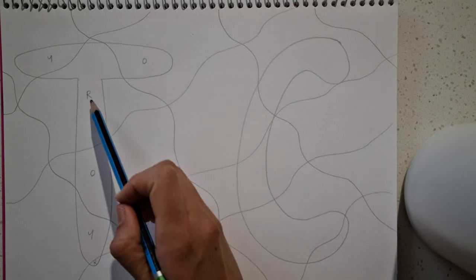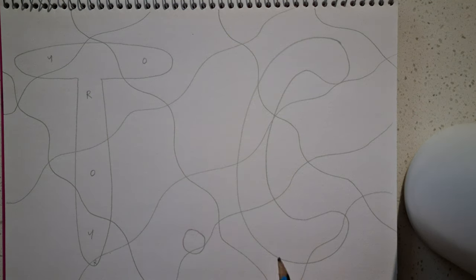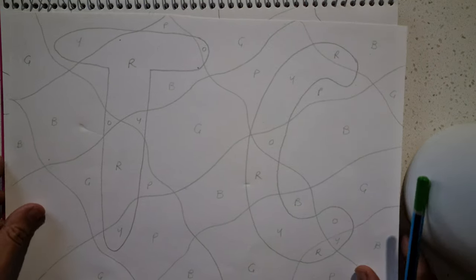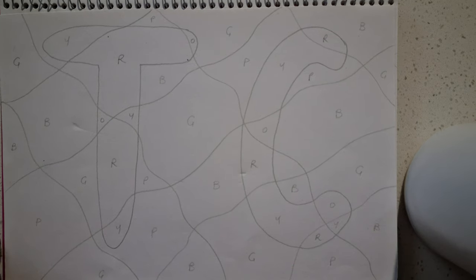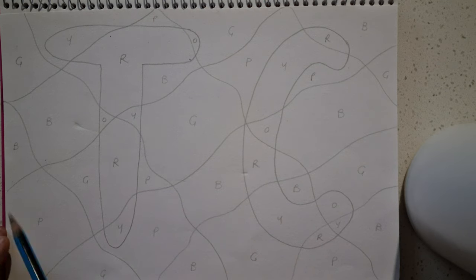When you are writing the initials of the colors in, keep only the warm colors in one of the areas and only the cool colors in the other. This is what your page will look like once you put all of the initials onto your composition.